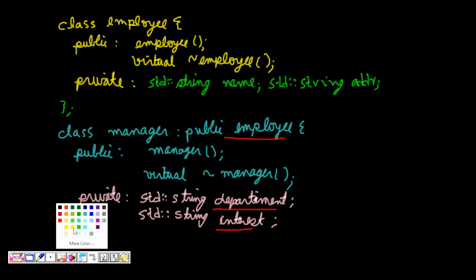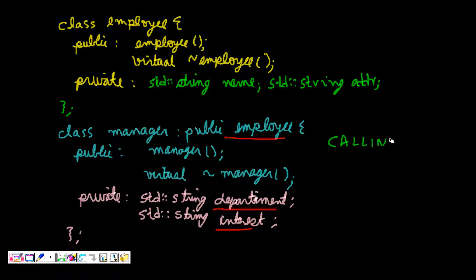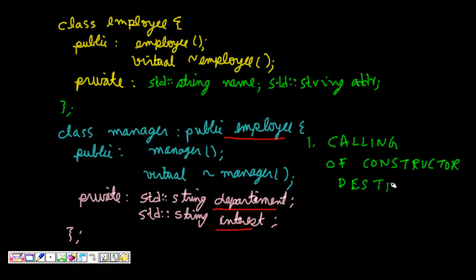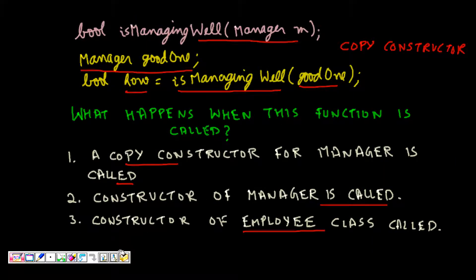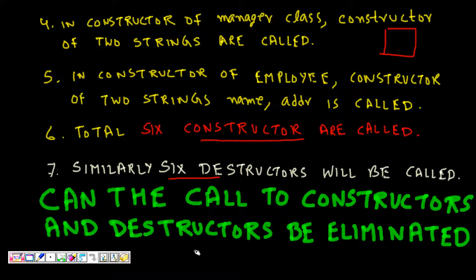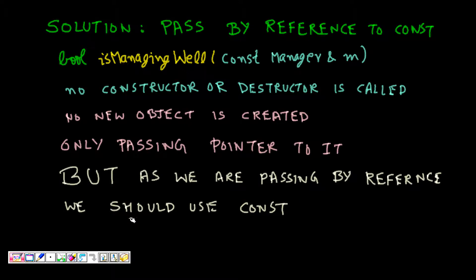The first problem is the calling of constructors and destructors. The second problem is that a lot of space is taken on the stack for the function. A class can be a huge class, and copying so many things leaves very little space on the stack. So is there any way to eliminate or bypass the constructor/destructor calls, and can we save memory resources on the function's stack?